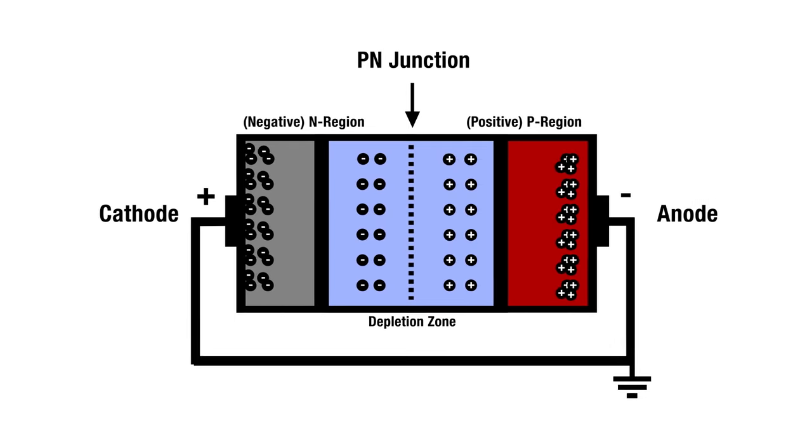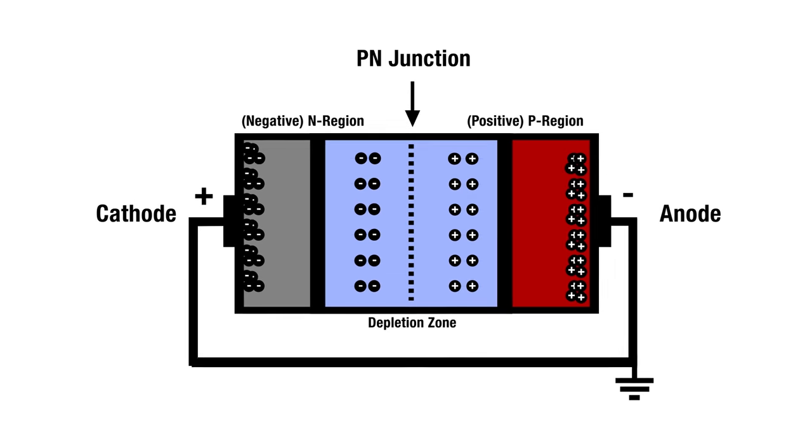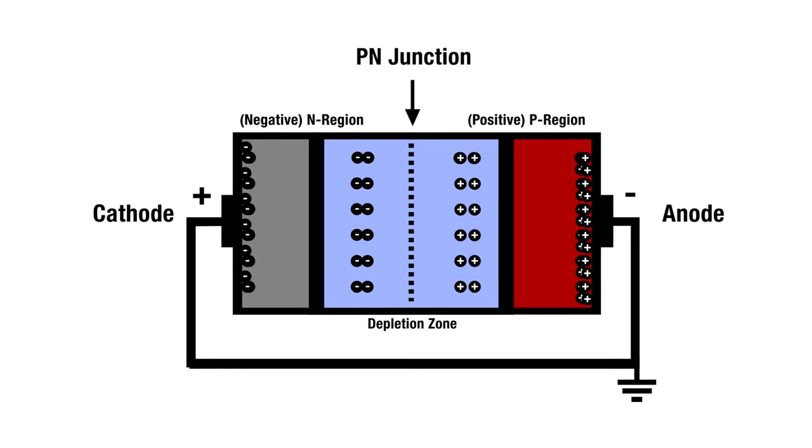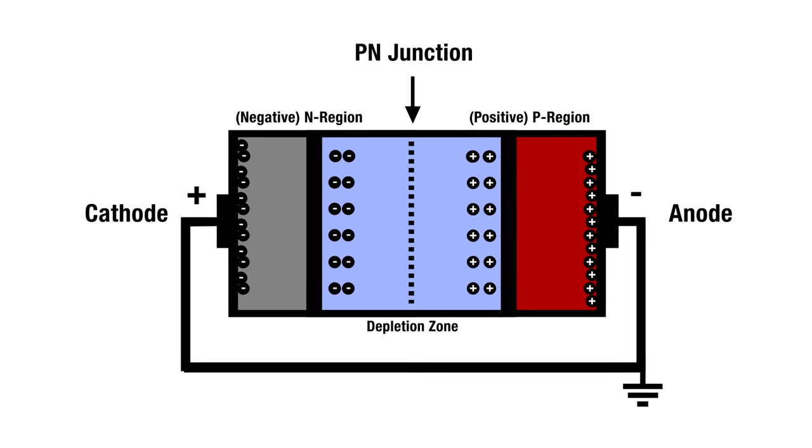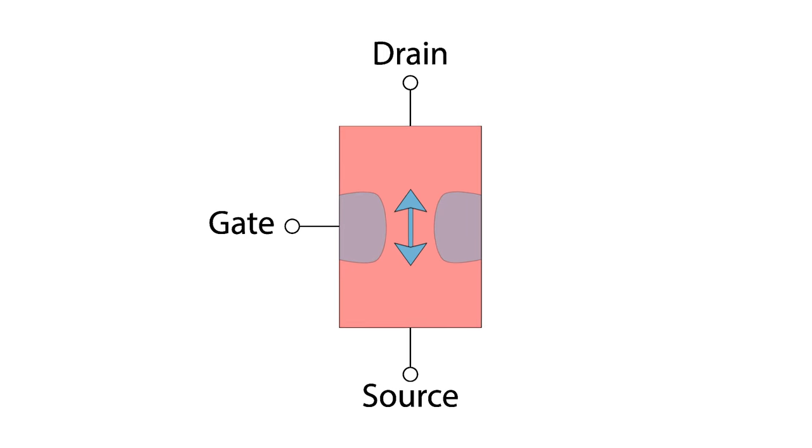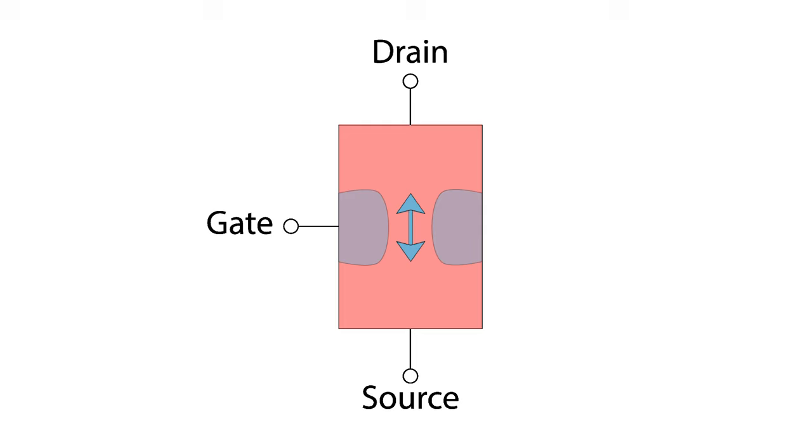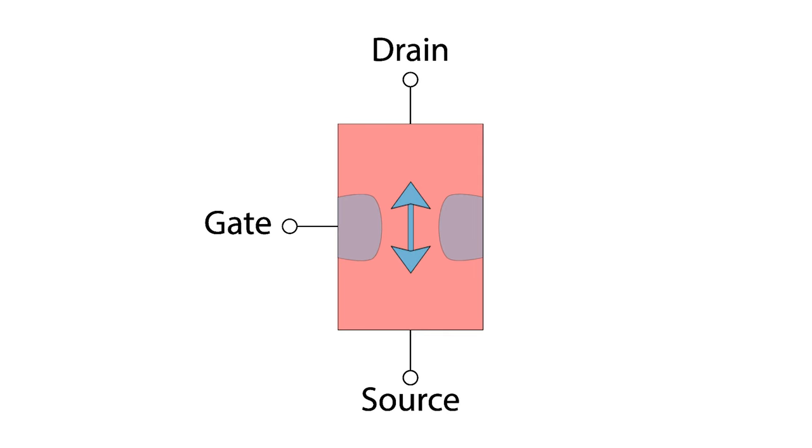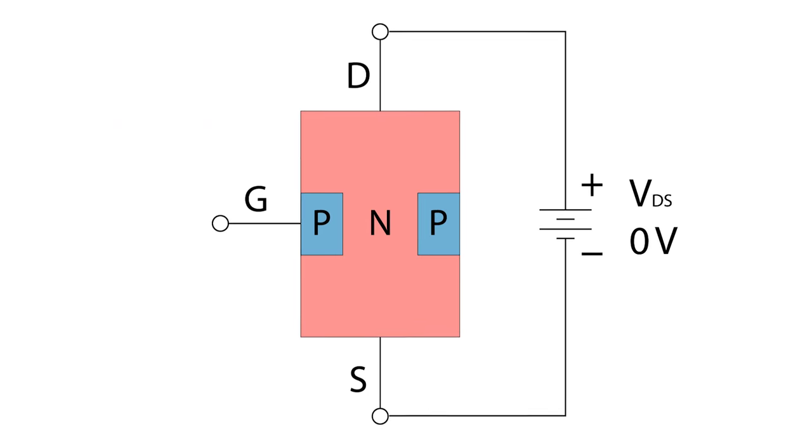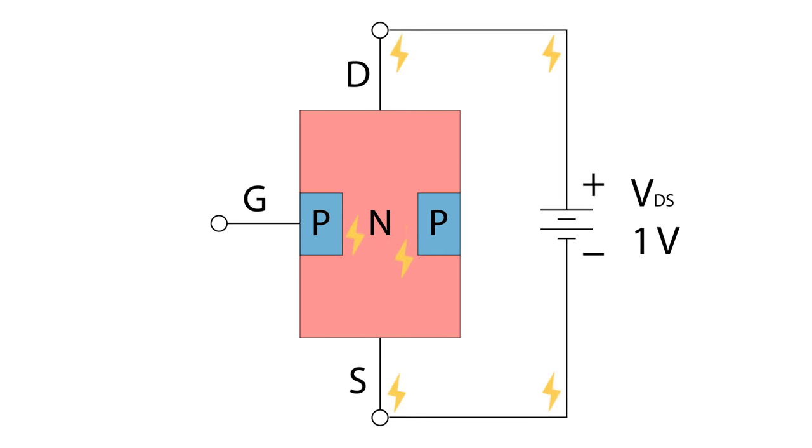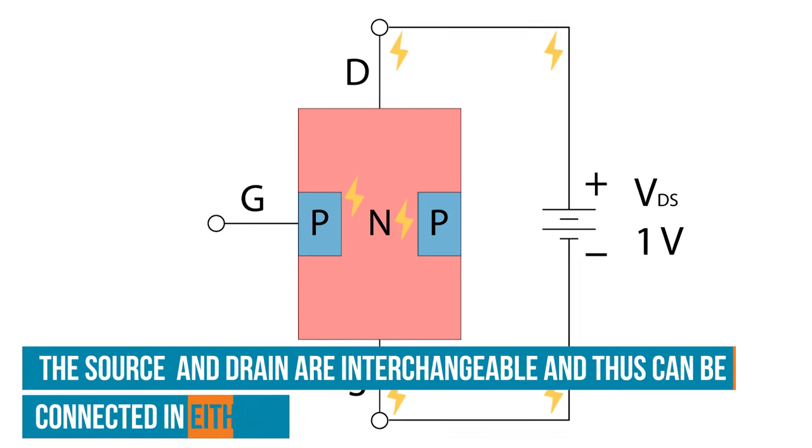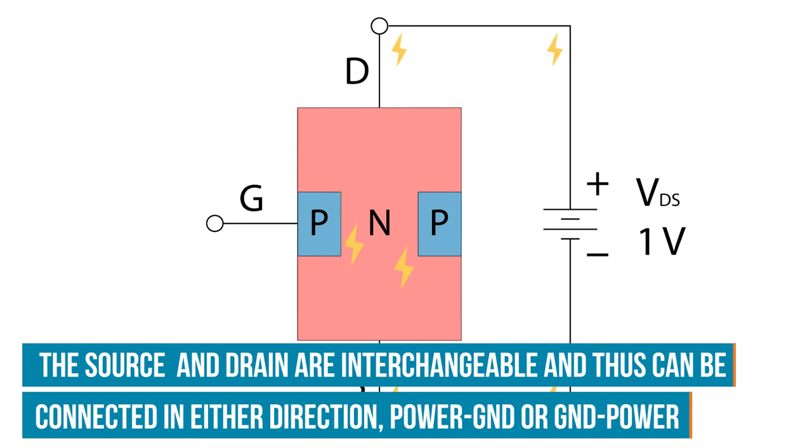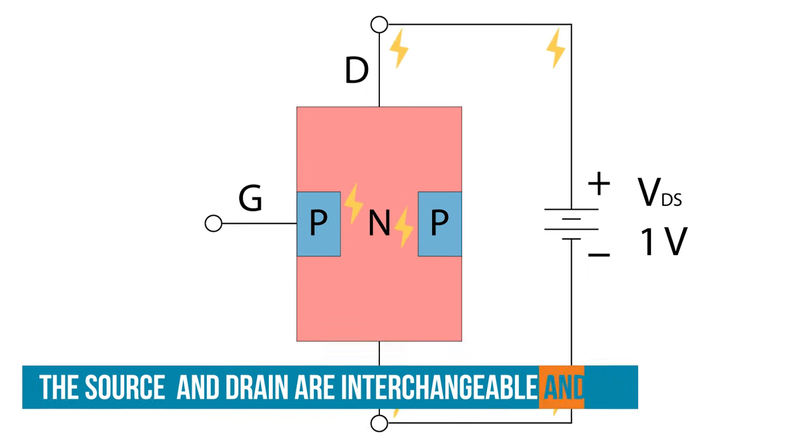We'll start with an N-channel JFET. We know from our diodes lesson that connecting a PN junction in reverse bias will cause its depletion region to grow. The depletion region acts as an insulator, restricting the flow of current. By increasing or decreasing the depletion zone at the PN junctions, we can control the flow of current through the channel. As you can see, the source and drain are connected by a single region. When a voltage is applied across them, current flows freely between them as if the two leads were shorted together. The JFET is essentially on by default.